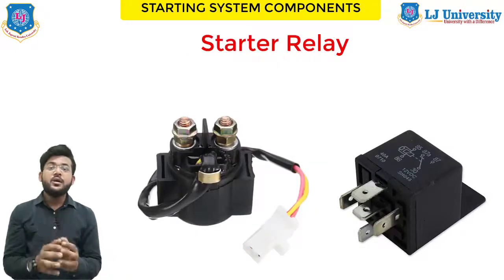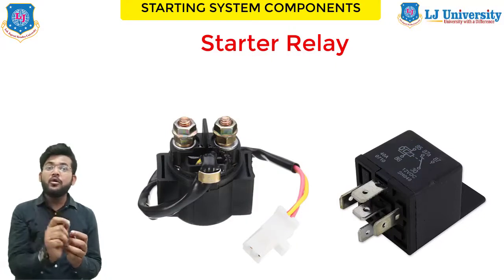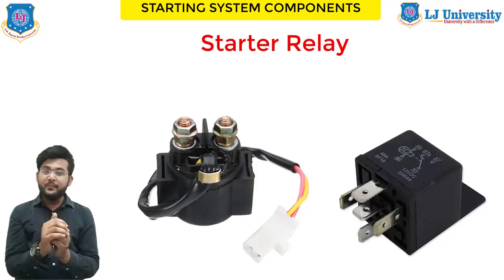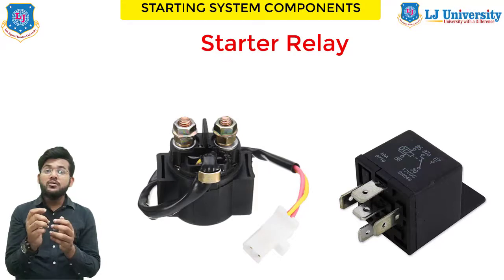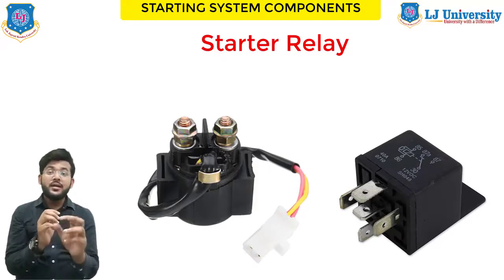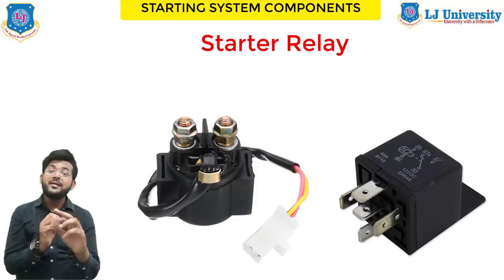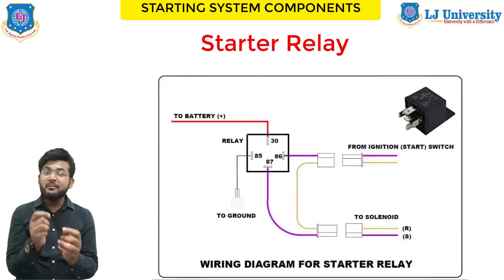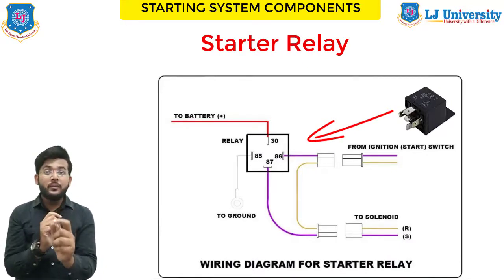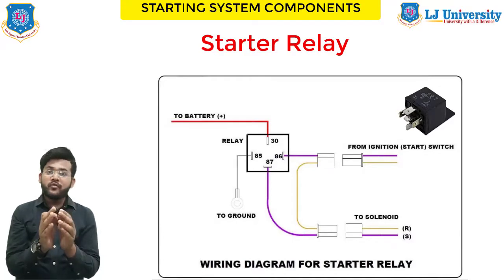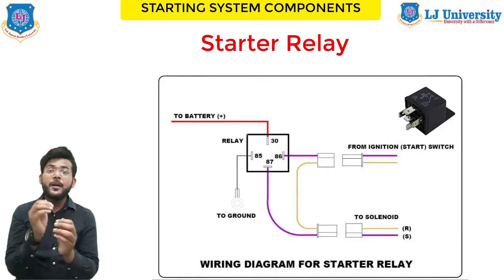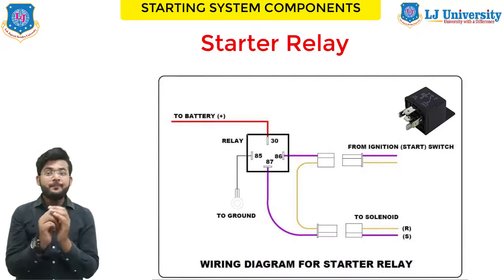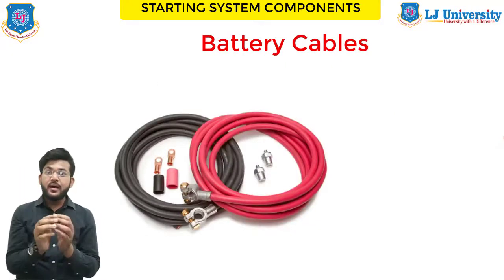Next is the starter relay. A relay is a device that allows a small amount of electrical current to control a large amount of current. An automobile starter uses a large amount of current — approximately 250+ amperes — to start the engine. Routing that much current through the ignition switch would require very large switches and thick wiring like battery cables, which is not practical. So a starter relay is installed in series between the battery and the starter motor. Some cars use a starter solenoid for the same purpose, allowing a small current from the ignition switch to control high current flow from the battery to the starter motor. The starter solenoid also mechanically engages the starter gear with the engine in some cases.